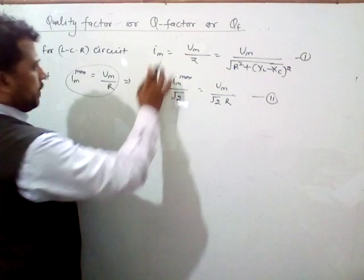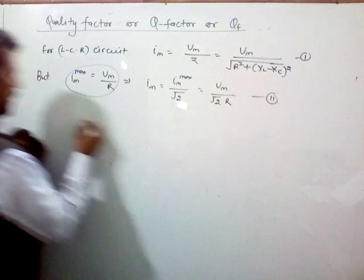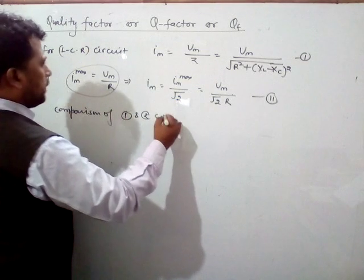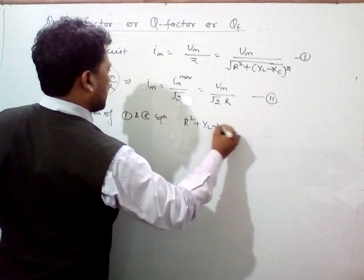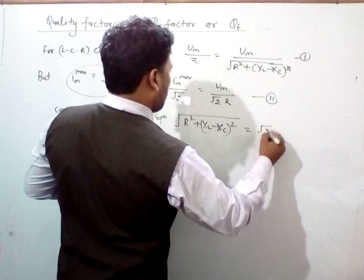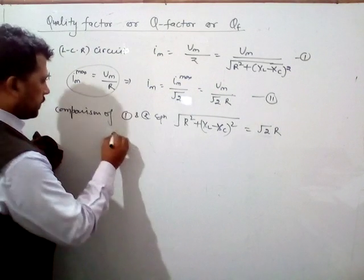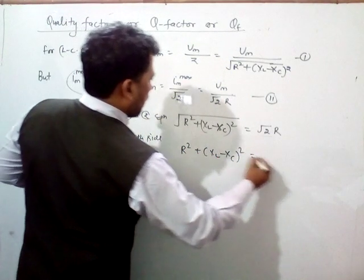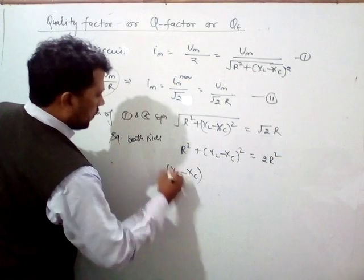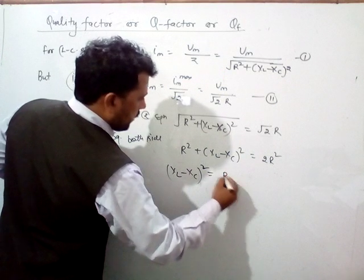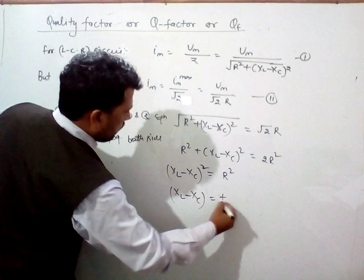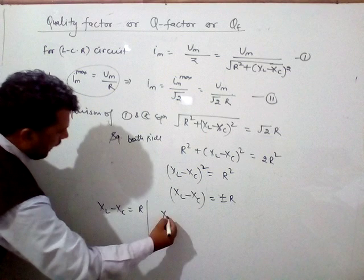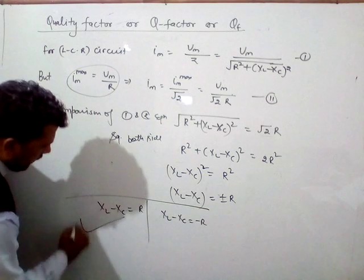On comparison of both equations, equating the two expressions for current: R squared plus (XL minus XC) squared equals (root-2 times R) squared. Squaring both sides gives 2R squared. Therefore, (XL minus XC) squared equals 2R squared minus R squared, giving R squared. So XL minus XC equals plus or minus R. This can be written as two conditions: XL minus XC equals +R, and XL minus XC equals −R.